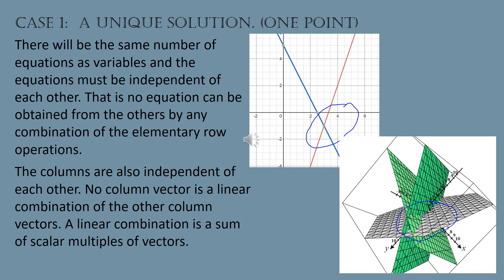If you have a unique solution to a system of linear equations, then there will be the same number of equations as variables, and those equations need to be independent of each other. That means no equation can be obtained from the others by any combination of the elementary row operations. A caveat is that if you start off with more equations than variables, some of the equations are going to be linear combinations of the others, and it'll reduce down to a system with the same number of equations as variables.